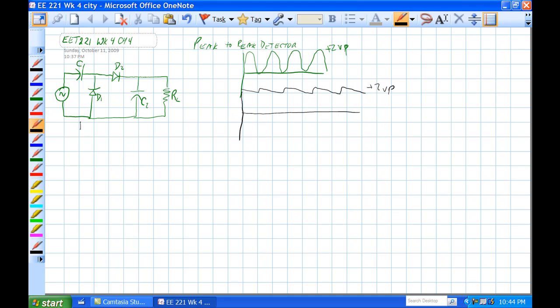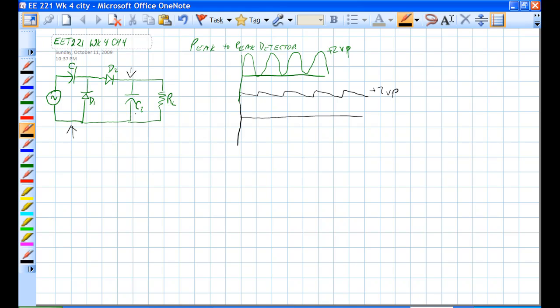This part of the circuit being a clamper and this being a rectifier, which will charge this cap to 2V peak. And the cap acts as a filter.